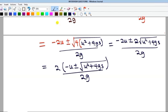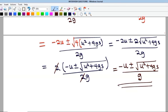Okay, close here, and this is over 2g. So why did I do that? Because I am seeing 2 in the denominator, and this will give me minus u plus or minus u squared plus 4gs all over my g as the solution.